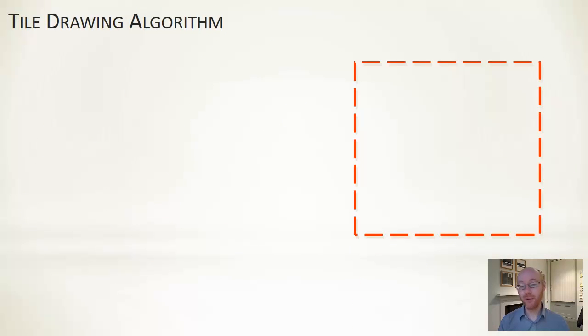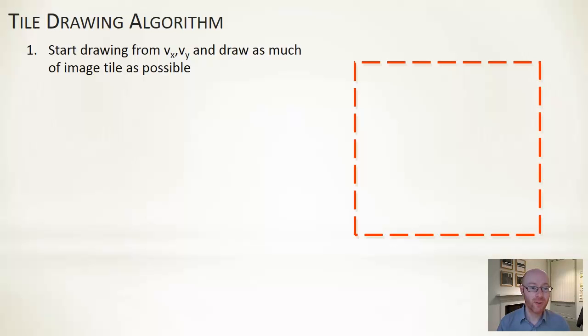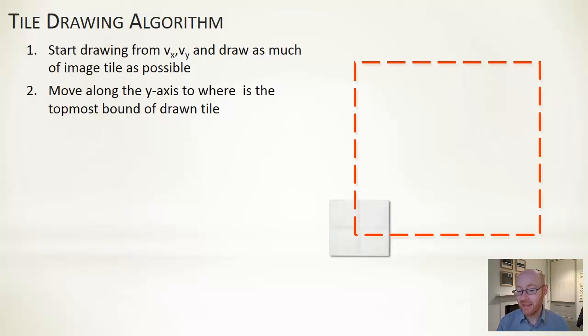By way of a hand-wavy algorithm, this type of thing would work. We're going to start drawing as much of the initial tile as we can. So it's going to overlap at vx, vy, which is the starting point of our viewport. And for our initial tile, we'll draw as much as we can within that particular draw request.